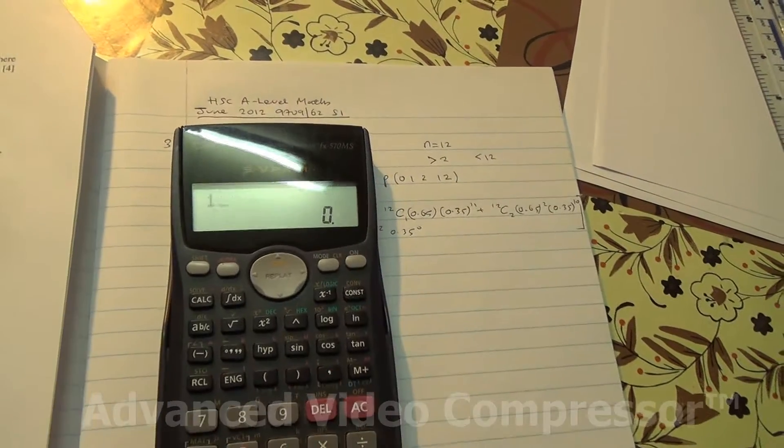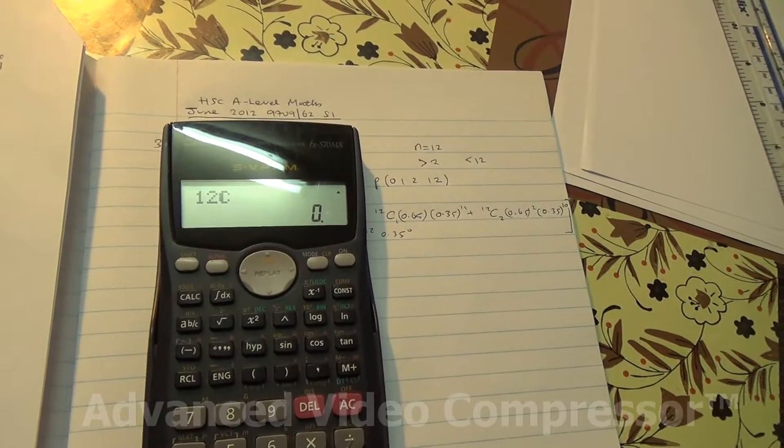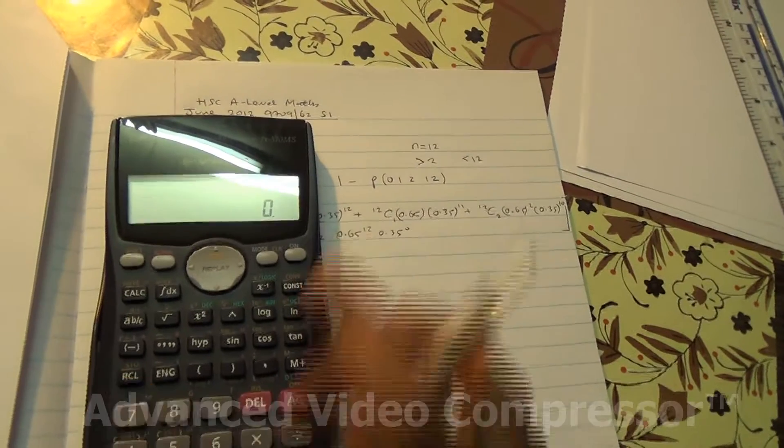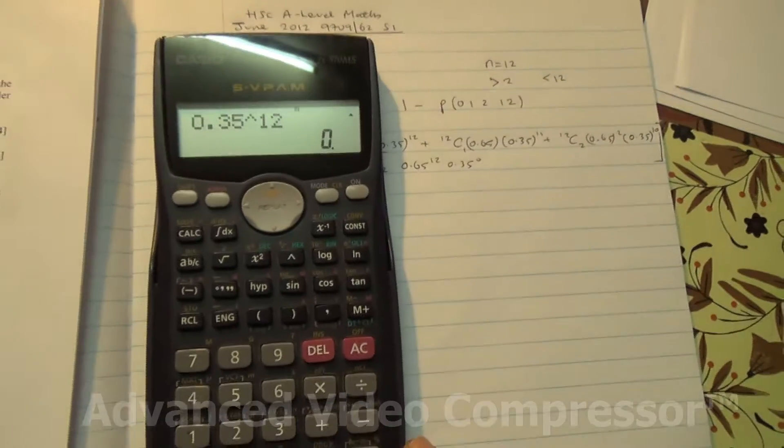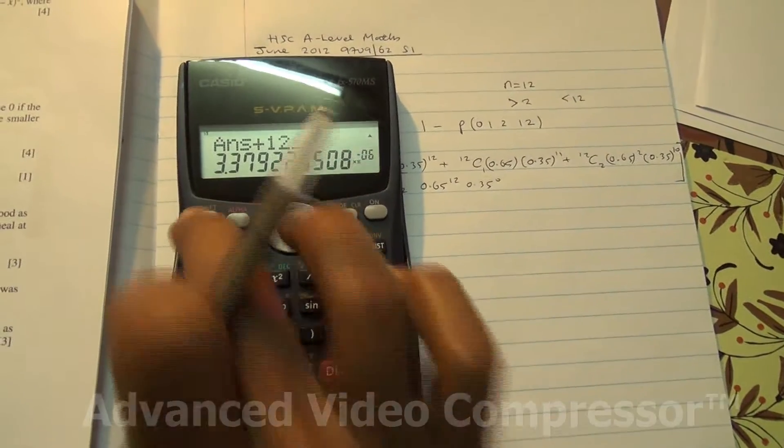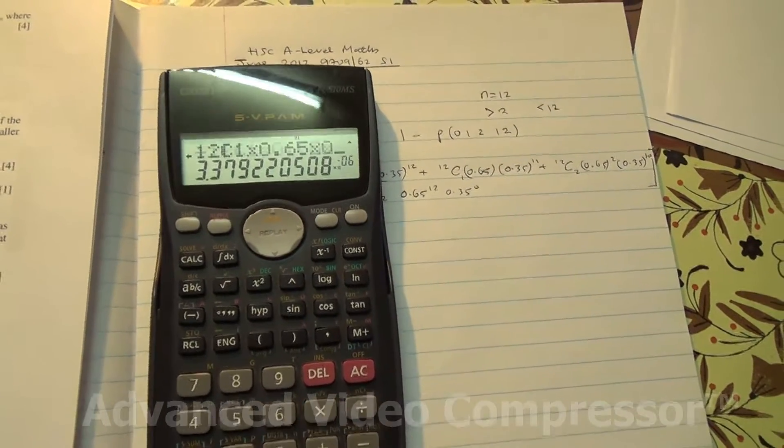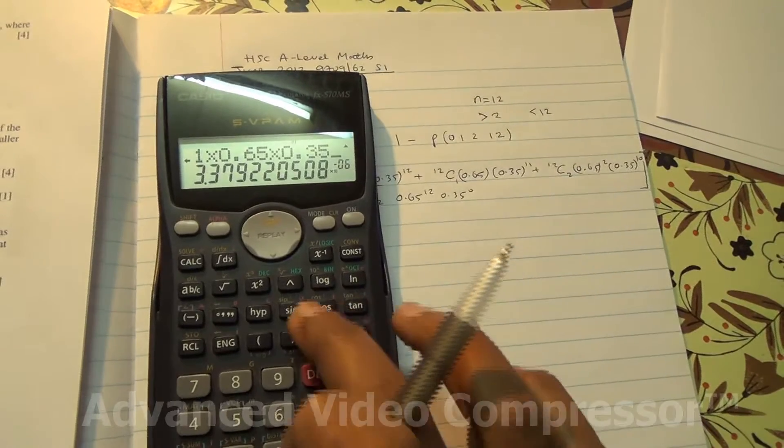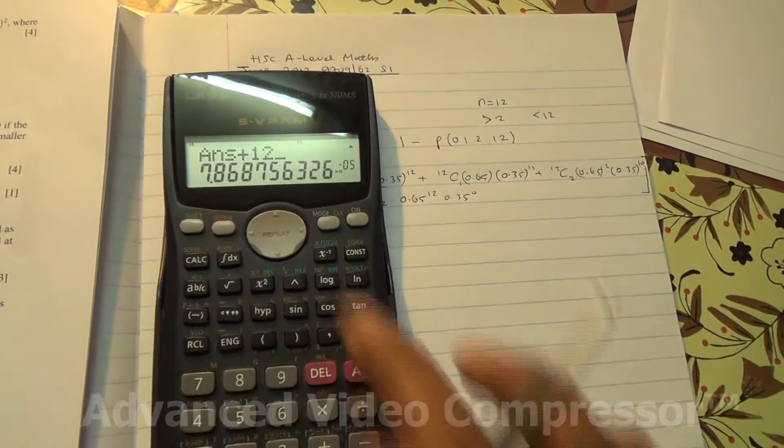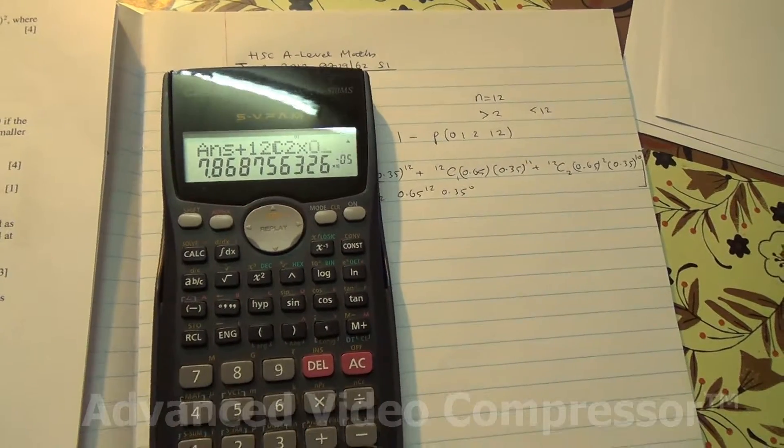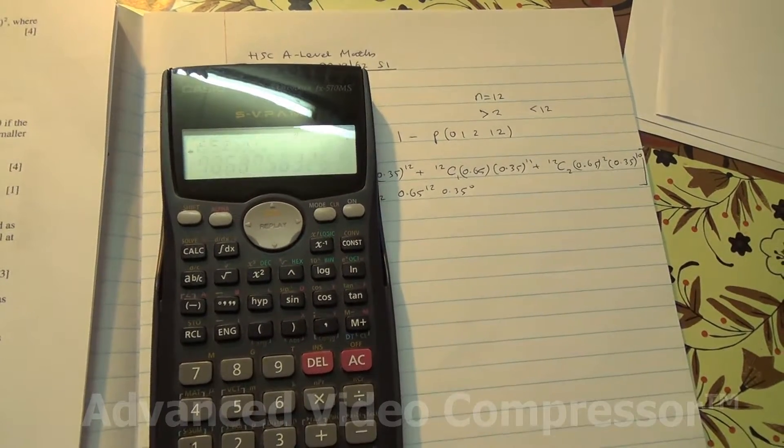So let's work it out. So first of all now, 12C0. So the first one is 0.35 to the power of 12, and press 12C1 times 0.65 times 0.35 to the power of 11, plus 12C2 times 0.35 to the power of 10,